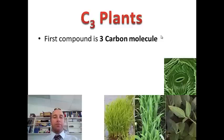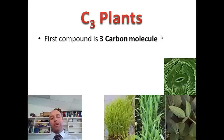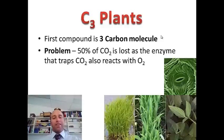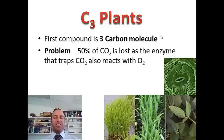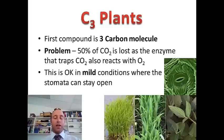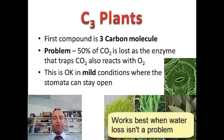Let's look at C3 plants — these are most types of plants. They're called C3 plants because the first compound they form in this stage of photosynthesis is a 3-carbon molecule. The problem is that quite a lot of the carbon dioxide taken in is actually lost because this enzyme also reacts with oxygen. This is fine in mild conditions where the stomata can stay open day in, day out, and carbon dioxide can easily get into the plant, so water loss probably isn't a big issue.